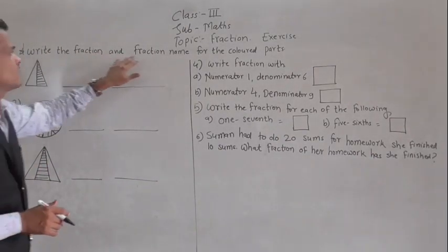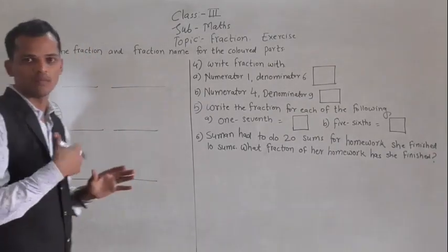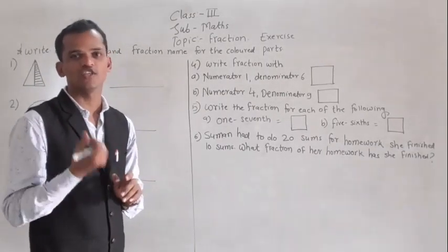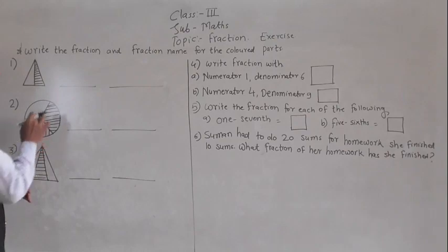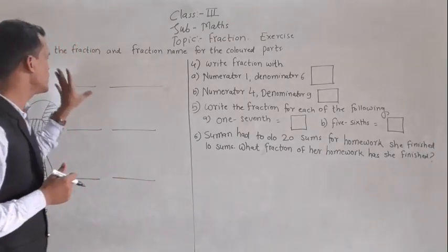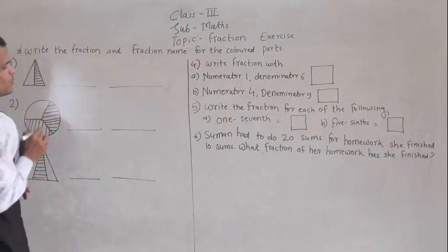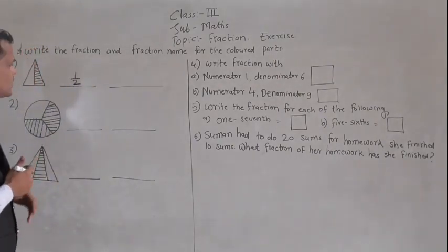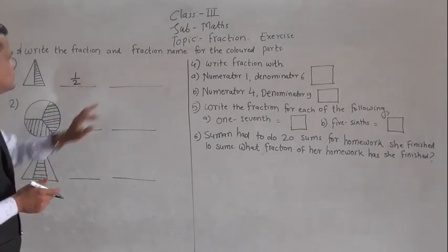Write the fraction and fraction name for the colored part. Here some figures are given and some part of each figure is shaded or colored. Here one triangle is given and half part means out of two equal parts, one part is shaded. So write the fraction: 1 by 2, or 1 upon 2. Out of two equal parts, one part is shaded. The name of that fraction is half.